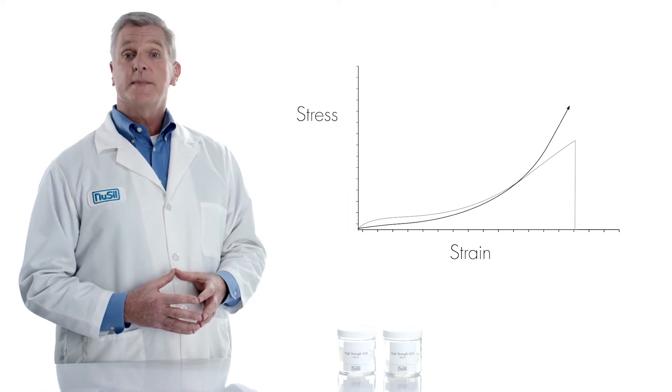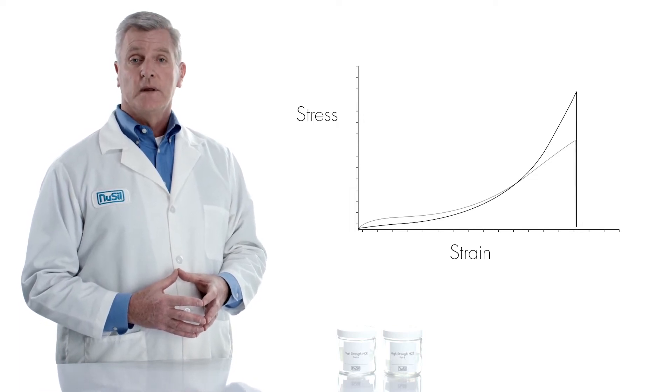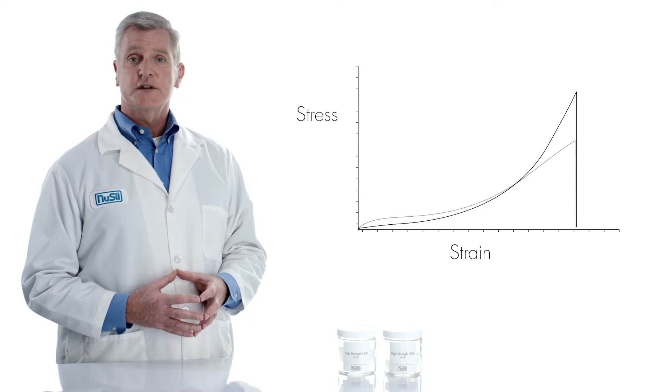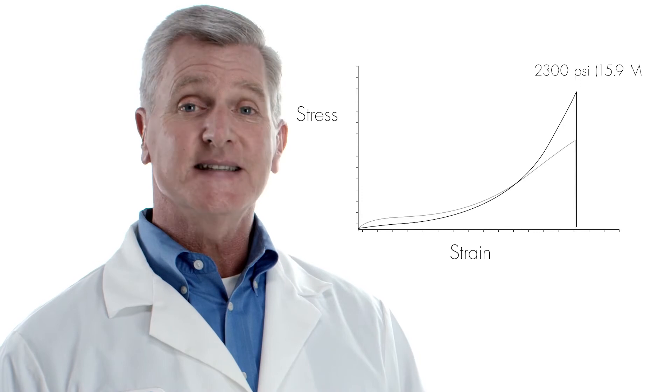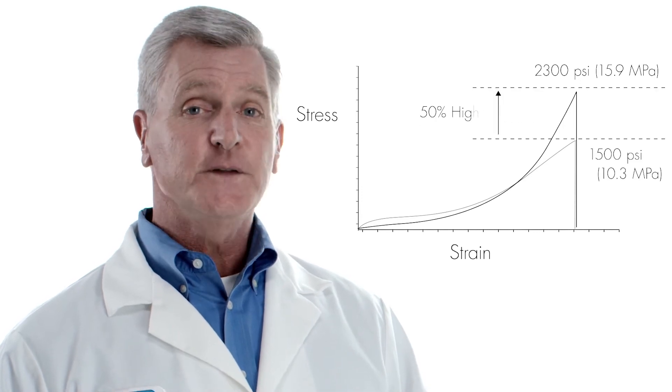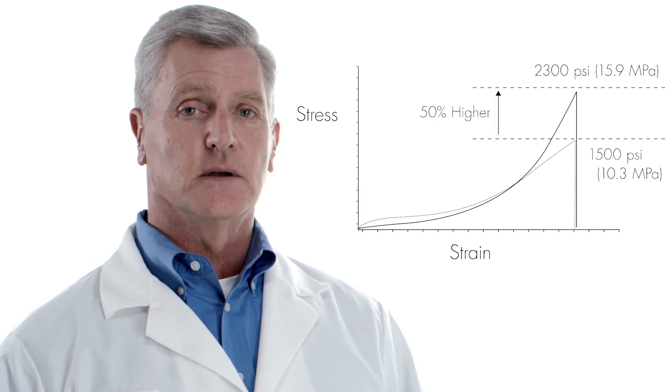Finally we see the rapid rise toward break and we measure an ultimate tensile strength for this material of 2300 pounds per square inch or almost 16 megapascals. 50 percent higher than any other silicone elastomer.